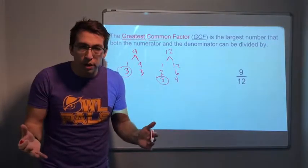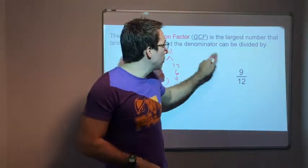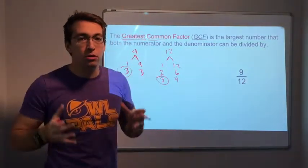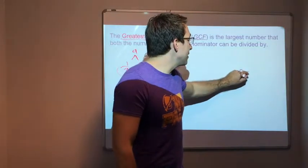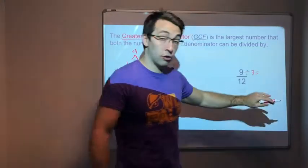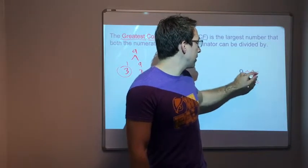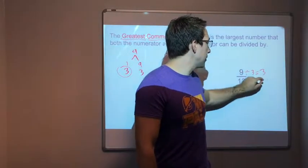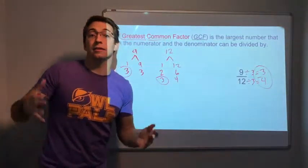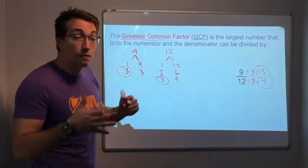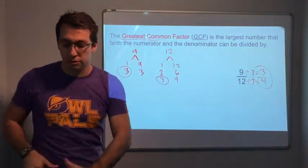So what do we do now? We have the greatest common factor. We use the GCF to reduce fractions, to simplify fractions. So 9 divided by 3, our greatest common factor. 12 divided by 3 equals... 9 divided by 3 is 3. 12 divided by 3 is 4. 9/12 equals 3/4. And we found that by finding and using our greatest common factor, GCF.